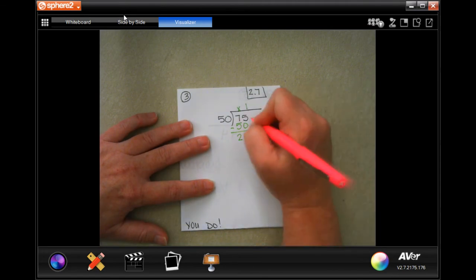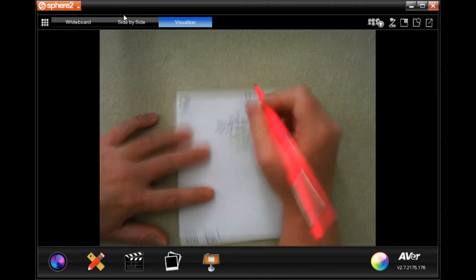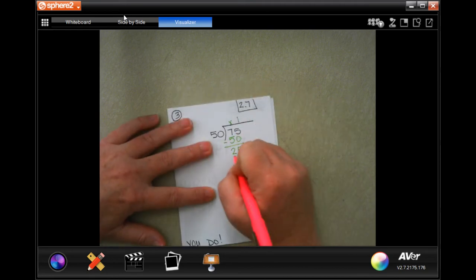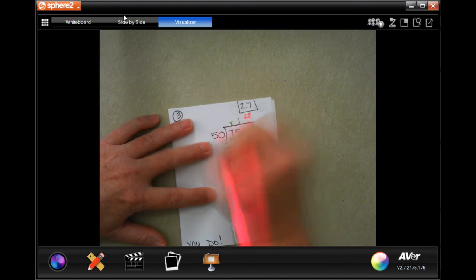So, now, where normally I would put a decimal, move it up, put a 0, bring it down. This time, I'm going to take my remainder. That's my top number. Take my divisor. That's my bottom number.